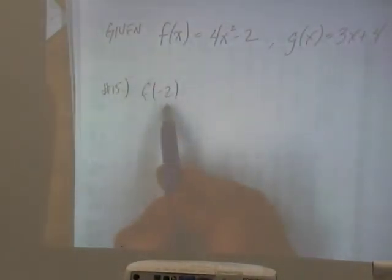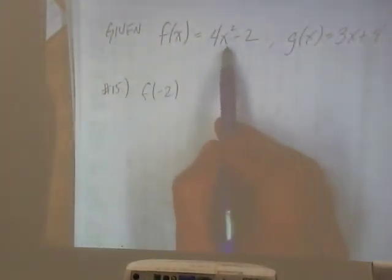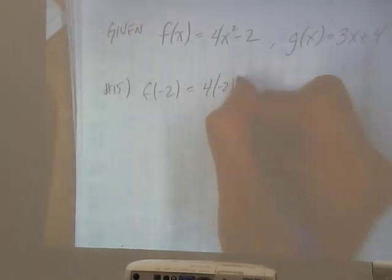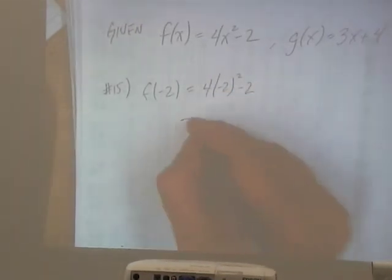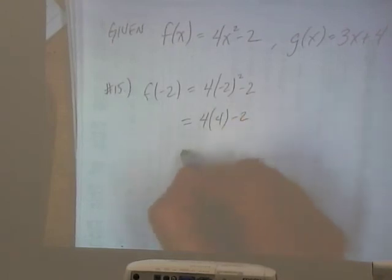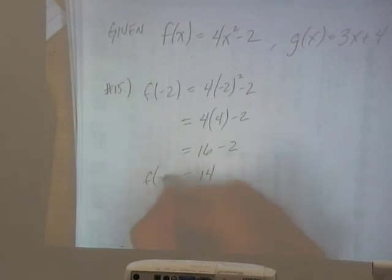So number 15 wants us to find f of negative 2. So we're just going to take the negative 2 and we're going to plug it into the f function, wherever the x's are. So it's just going to be equal to 4 times negative 2 squared minus 2. 4 times 4. 16 minus 2 is equal to 14. So f of negative 2 is equal to 14.